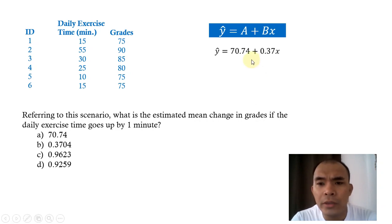The question, if I'm going to increase the value of our x here, our daily exercise time by 1, what will happen to the y? It will simply increase by this value, 0.37. The answer in this particular problem is 0.37, but how to explain that?